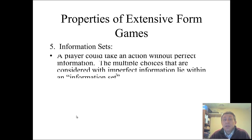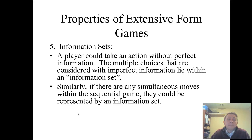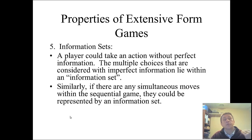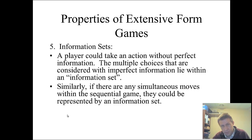Information sets: if a player takes action without perfect information, those choices lie within an information set, represented by circling more than one decision node. This can also represent a simultaneous move game within a sequential game, or represent a simultaneous game using extensive form. It's simply circling the choices to indicate the player doesn't know — for instance, if player A moves first and could go right or left, and player B doesn't know, you circle the two decision nodes to show player B does not know what player A chose.